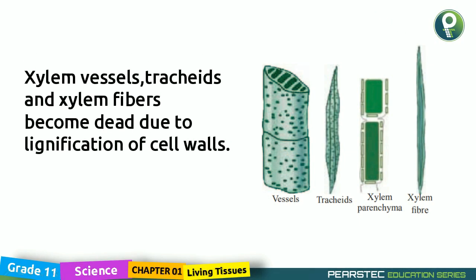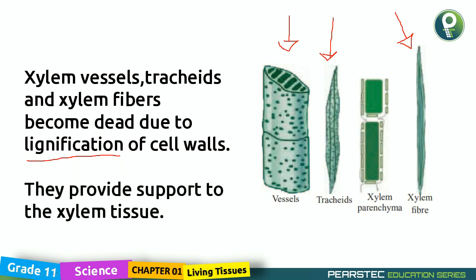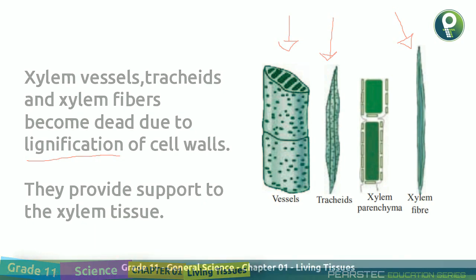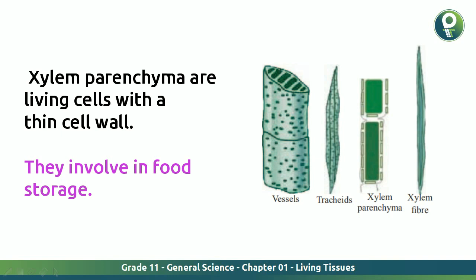Xylem vessels, tracheids, and xylem fibers - xylem fibers become dead due to lignification of cell walls. That is the right word to remember: lignification of cell walls. Now, xylem parenchyma are living cells with a thin cell wall, and they are involved in food storage. The vessels and tracheids were talking about water, but xylem parenchyma involves food storage.